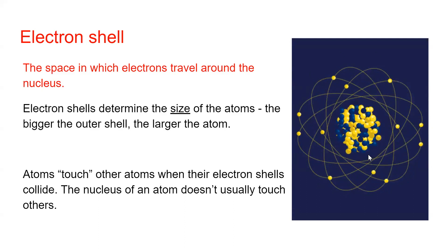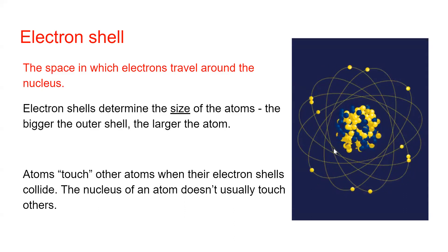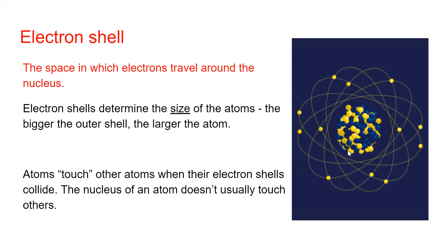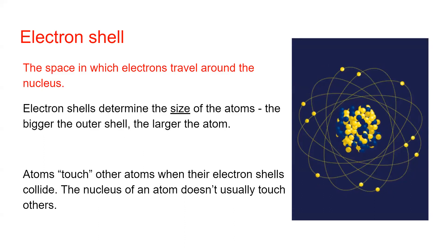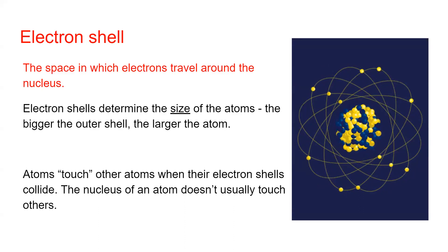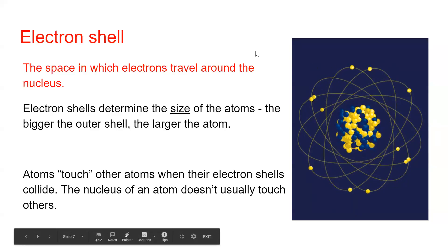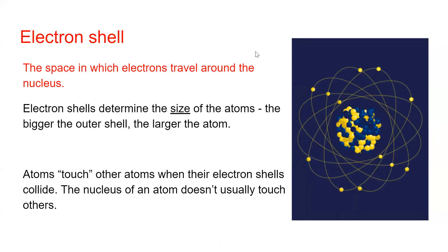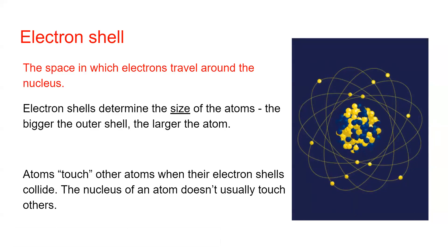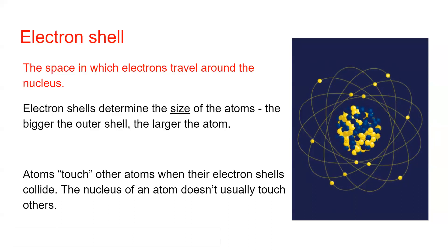Electrons travel around the outside of the atom in what we call an electron shell. Electron shells are more of a way of imagining electrons moving — in reality they move in clouds or orbitals, but for physical science we say they move in shells. The size of the shell determines the size of an atom, so some atoms are actually larger than others.